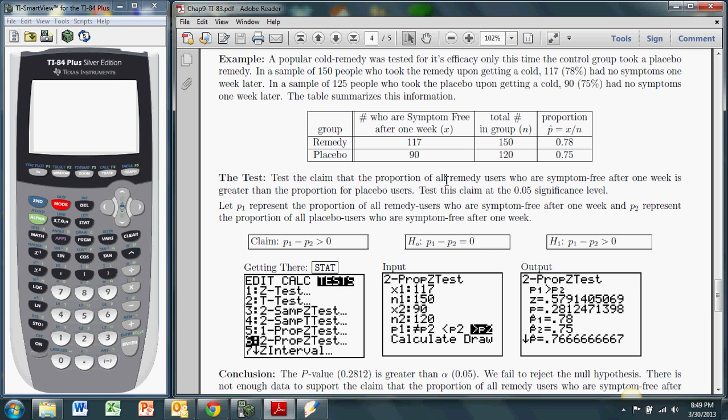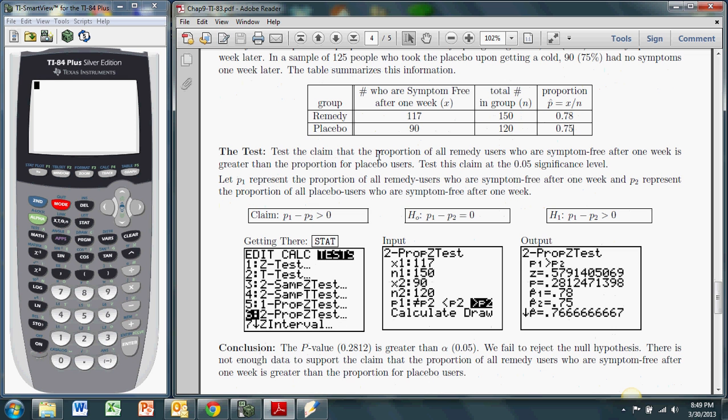So basically, we want to see, is this a big enough difference to conclude that there will be a difference in all people who take the remedy? This table also has the sample proportions, but we don't need those to use the TI. We're going to test the claim that the proportion of all remedy users who are symptom free one week later is greater than the proportion for the placebo users. So it's a proportion test, comparing two proportions.